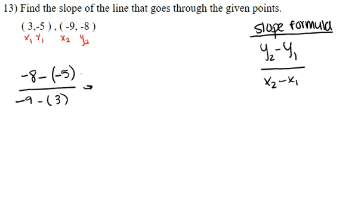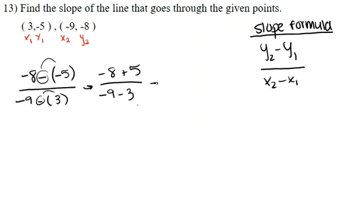So I'm going to go ahead and reduce and distribute these negative signs. You're going to get negative 8 — negative times a negative is a positive — so it's going to be plus 5. And negative 9, negative times a positive is negative 3. This becomes negative 8 plus 5, which gives you negative 3. Negative 9 minus 3 gives you negative 12.